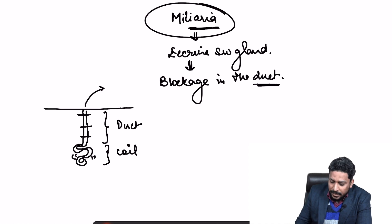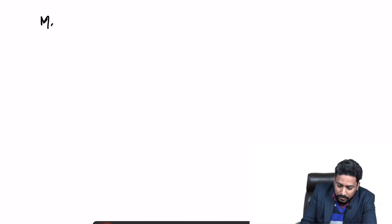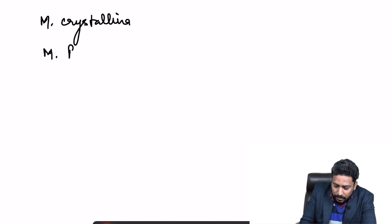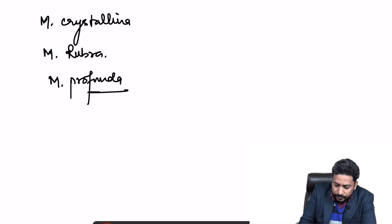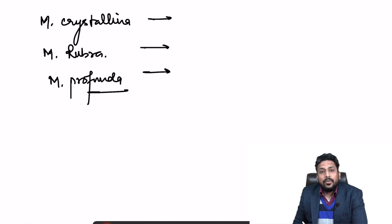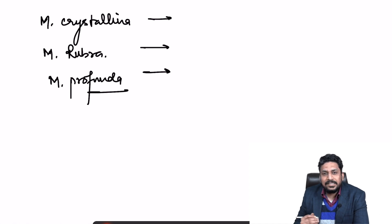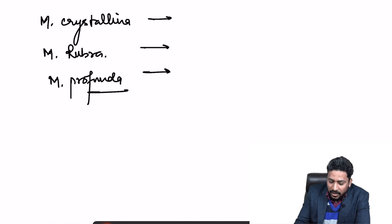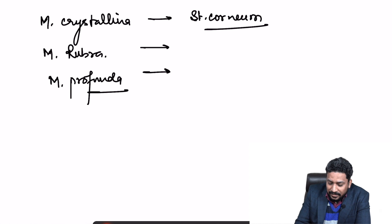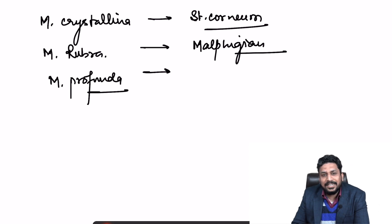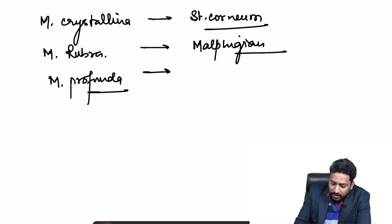Miliaria can be of multiple types: miliaria crystallina, miliaria rubra, or miliaria profunda. To differentiate these three, remember it depends on the level of blockage. In crystallina, blockage is at the level of the stratum corneum. In rubra, it is at the level of the Malpighian layer — the lower epidermis, that is stratum spinosum along with stratum basale. In profunda, it is much deeper, at the level of the dermo-epidermal junction.